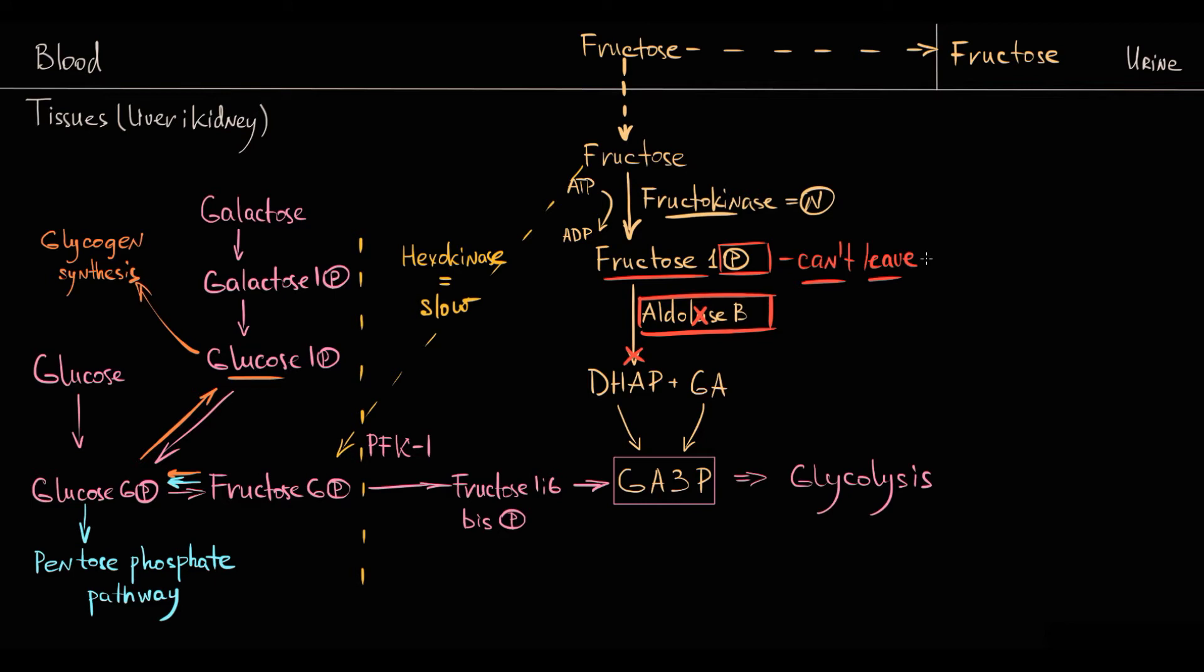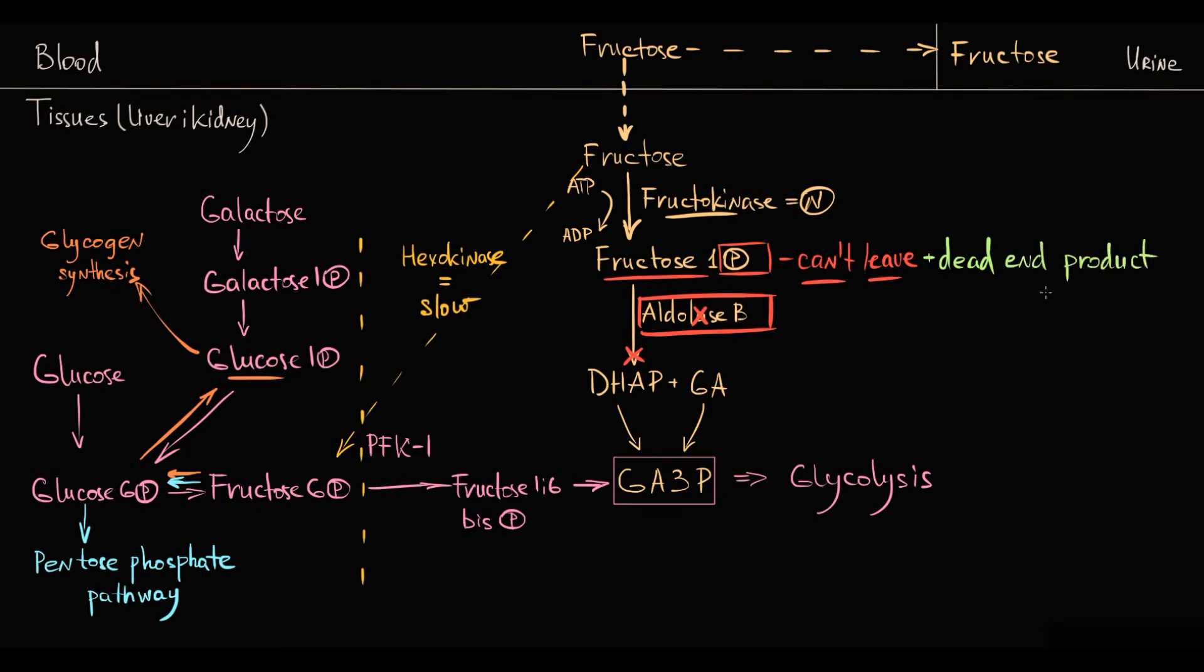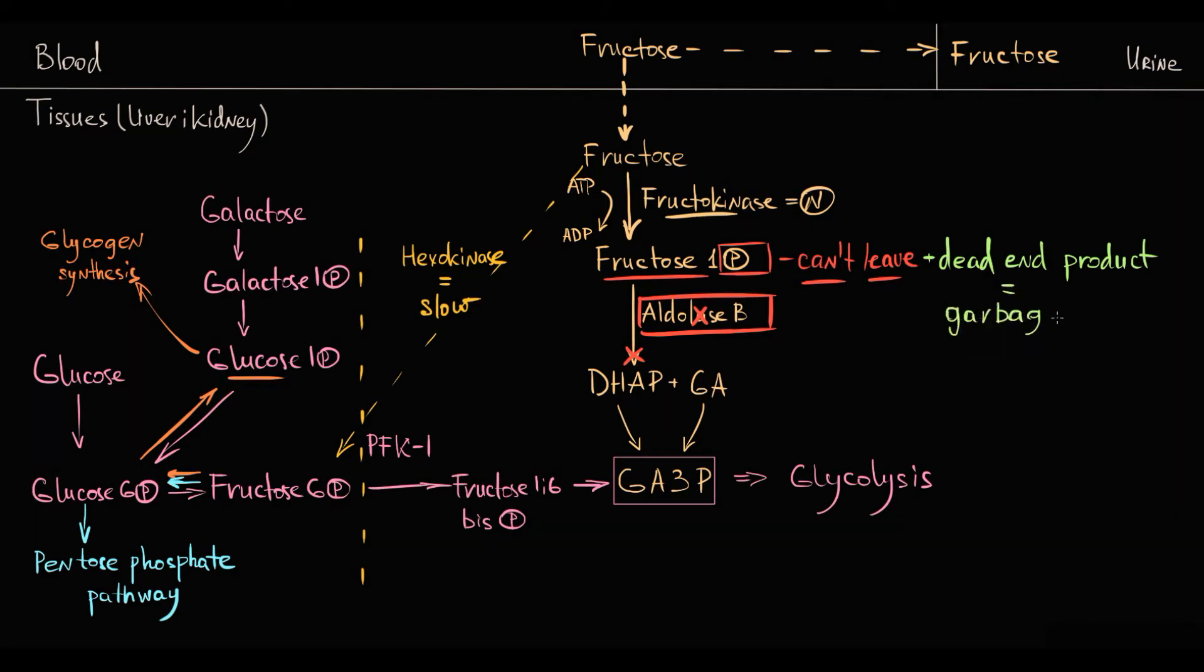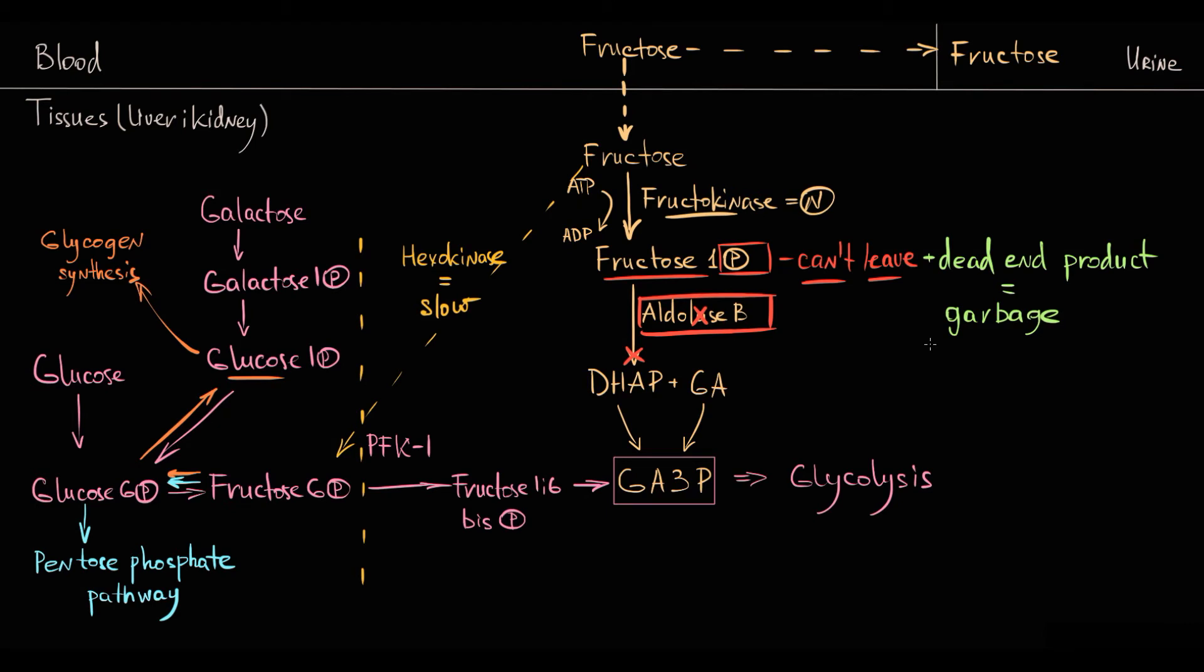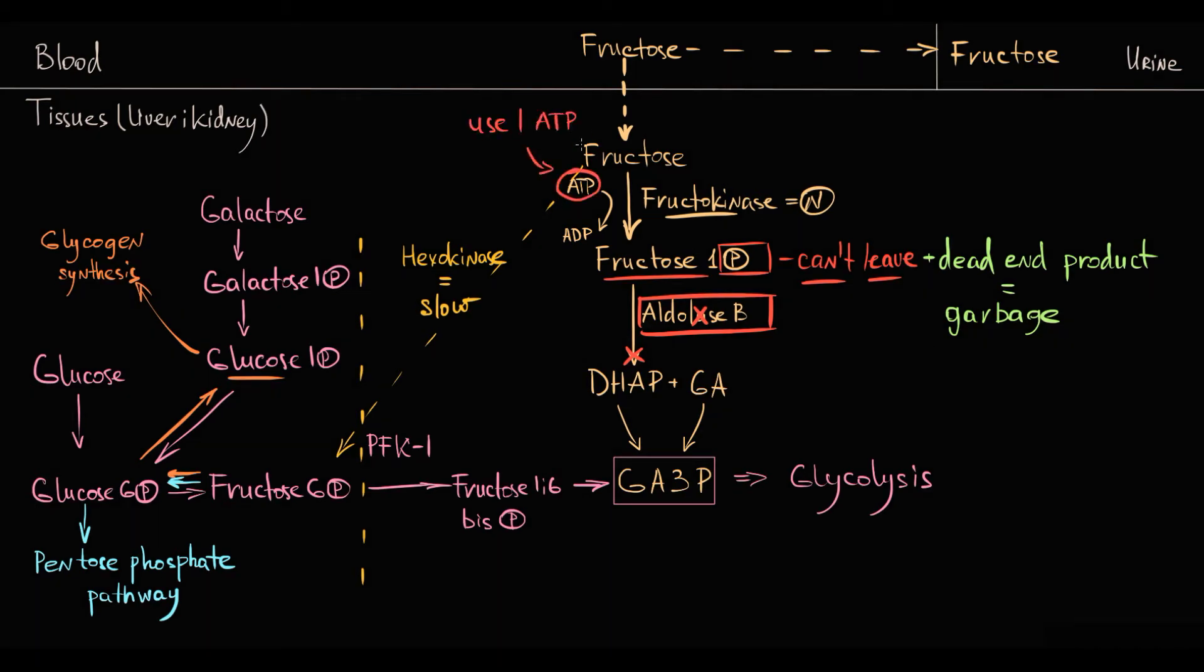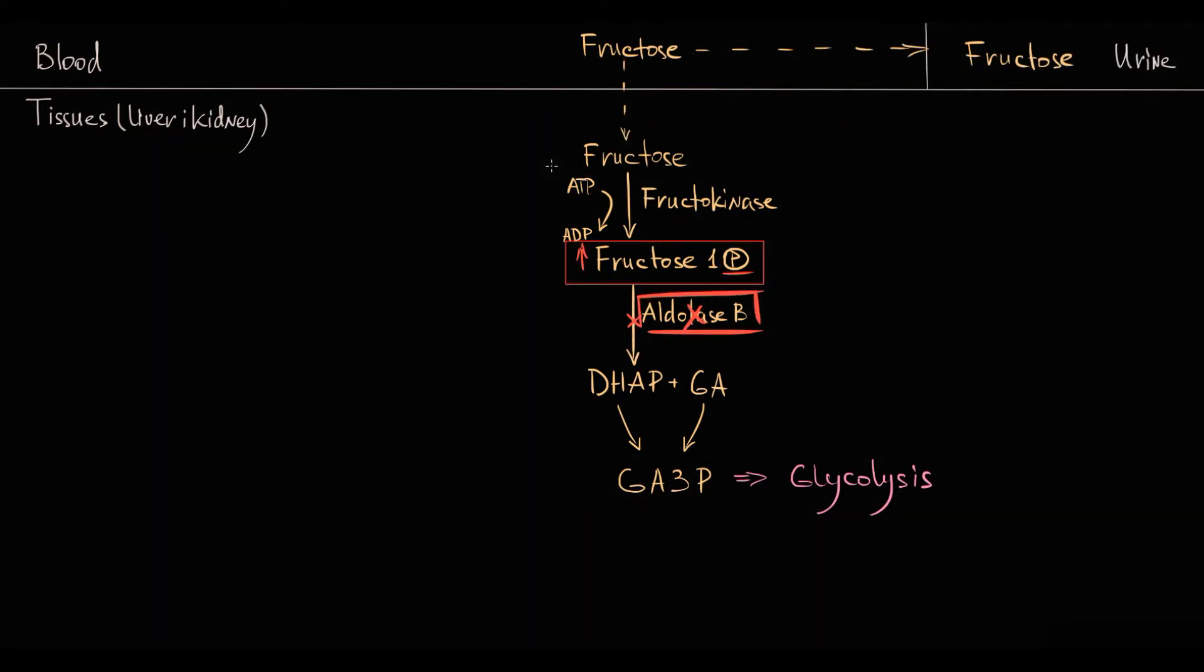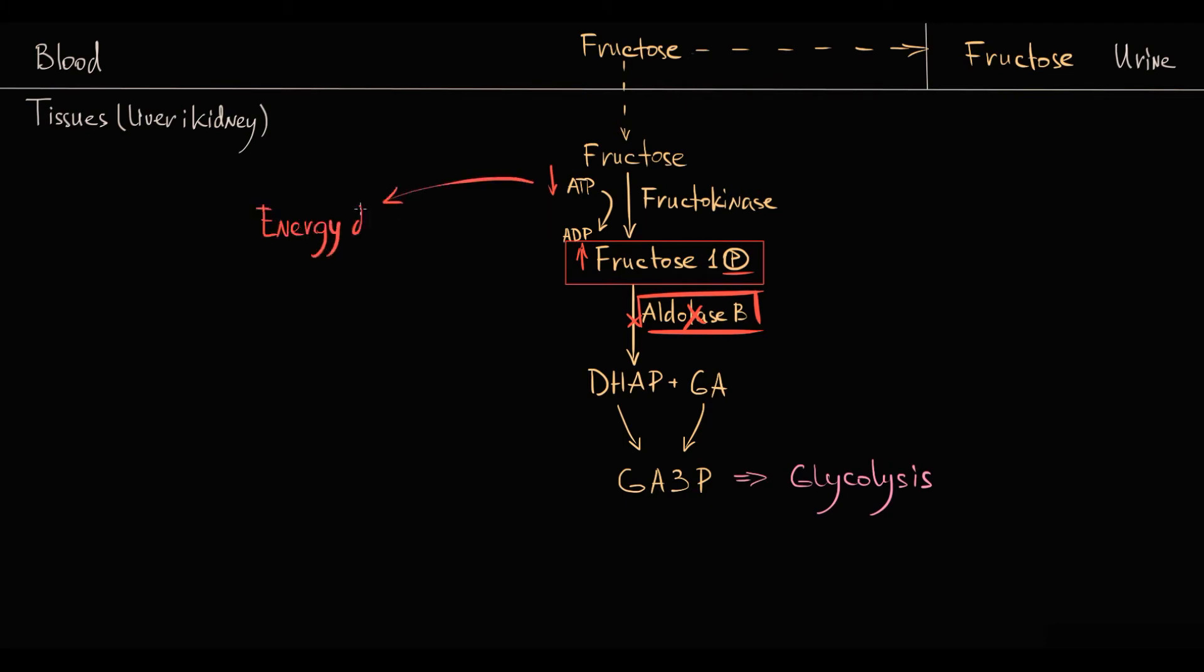And the problem is that fructose 1-phosphate in massive amounts is a metabolically toxic substance that inhibits glycogenolysis and gluconeogenesis. First of all, fructose 1-phosphate is a dead-end product. We don't have any enzyme except aldolase B to convert it into something else. So in case of aldolase B deficiency, it becomes total garbage for the cell. And importantly, to form fructose 1-phosphate, fructokinase uses one ATP molecule. And because it's a dead-end product, it just consumes ATP and does not generate any ATP back. So progressive production and accumulation of fructose 1-phosphate causes depletion of intracellular phosphate that results in an energy-deficient state.